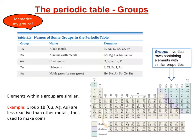Remember that groups are put into similar categories. Group 1b is less reactive than other metals, which is the reason these three metals are used to make coins.